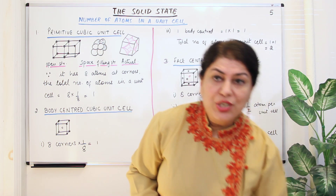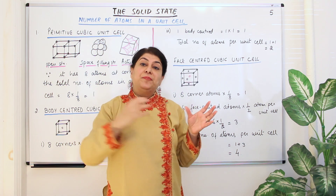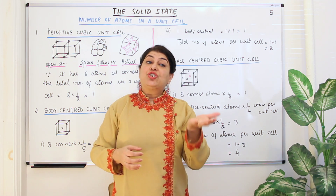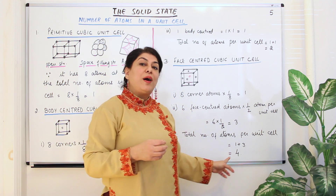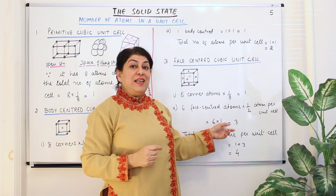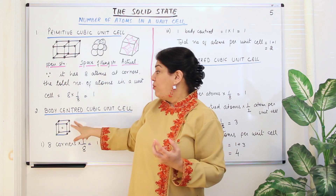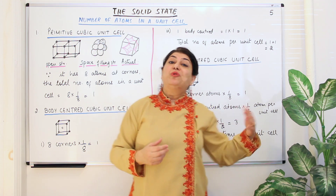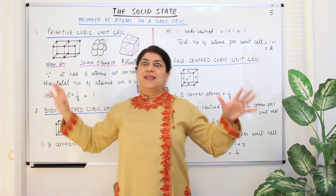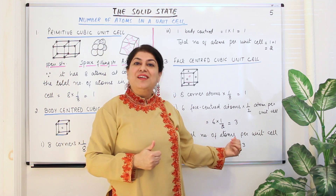What do we understand from this? If you have the same element arranged as primitive, body-centered, or face-centered, which would have the most density? The most dense arrangement is the one with more atoms in the same volume. The FCC has four atoms per unit cell, BCC has two, and primitive has only one. So the face-centered cubic arrangement is the most dense, the heaviest, and the most compact.